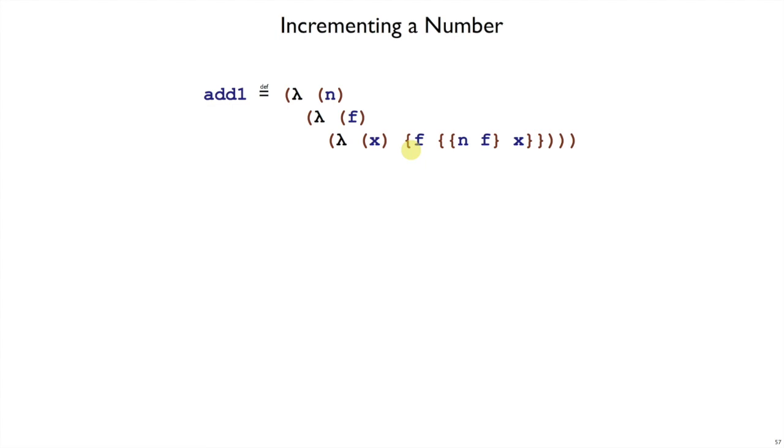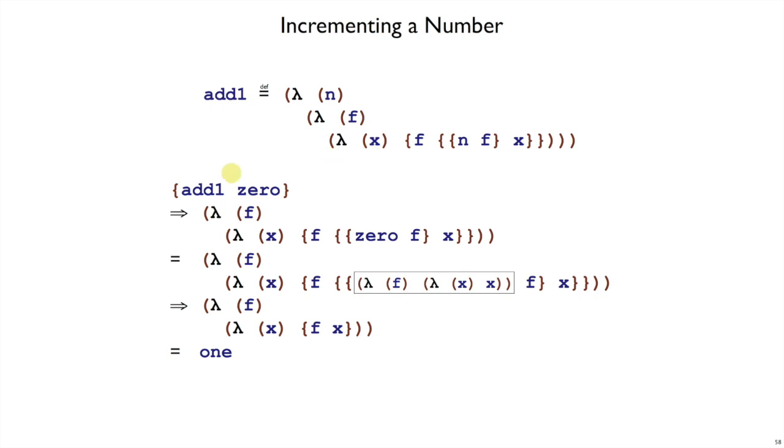We can double-check that this encoding is right by trying it out on an example. Here is add1 of 0. Now, add1 of 0 is the same thing as we pass the 0 into add1, that is, pass it into n. So we get the body of the function, where this n is replaced by 0. So that's what we see here. Now, does this function represent 1? Well, we can perform some simplifications on the body of the functions, in the same way that an optimizing compiler will go into the body of a function and simplify things so that it runs faster, or is more canonical. So that's what we're going to do.